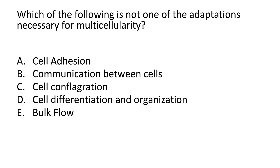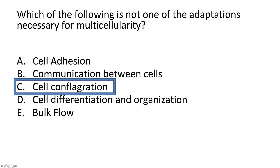Which of the following is not one of the adaptations necessary for multicellularity? Cell conflagration is the answer — that's not even a real thing. Cell adhesion is very important for linking cells together. Communication between cells is needed for coordination. Cell differentiation and organization are needed for specialized cell types. And bulk flow is needed to deliver nutrients to all cells since many are not in direct contact with the environment and diffusion alone is not sufficient.